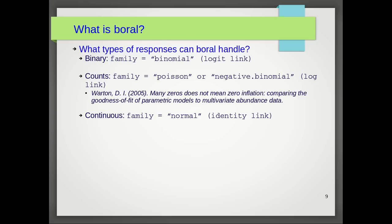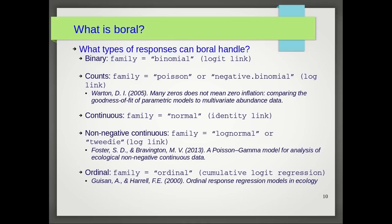What types of responses can BORAL handle? If you have binary data or presence-absence data, you can try family equals binomial. If you have counts, you can try Poisson or negative binomial. The negative binomial is particularly useful if you're modeling overdispersed counts. If you have continuous data, you can try family equals normal. If you have non-negative continuous data, you can try lognormal or Tweedie. The Tweedie distribution, aside from having a very fancy name, is particularly useful if you're modeling something like terrestrial or marine biomass. And finally, if you are modeling ordinal data, you can try family equals ordinal, which does cumulative logit regression.